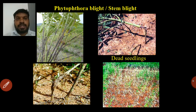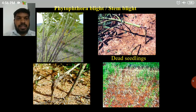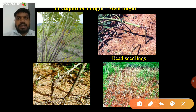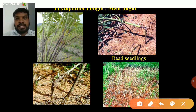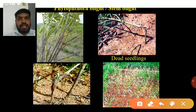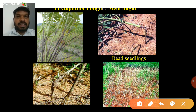First of all, phytophthora blight or stem blight. It mainly occurs in cloudy and drizzling conditions — drizzling conditions, cloudy nature, and warm conditions are favorable for the disease.